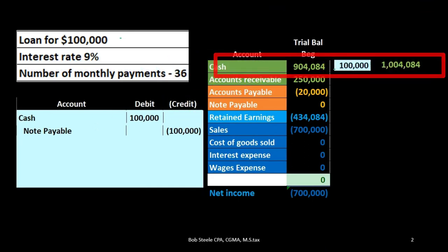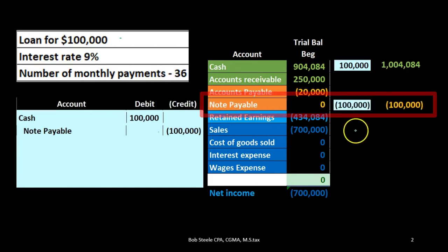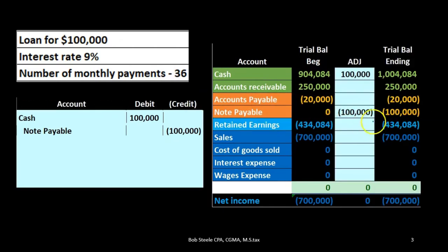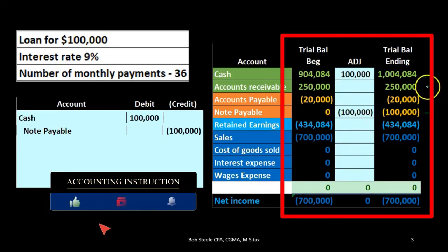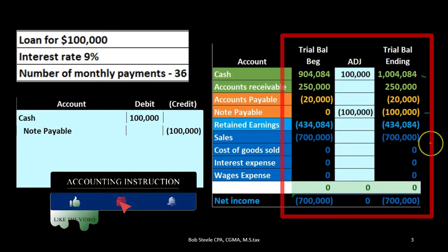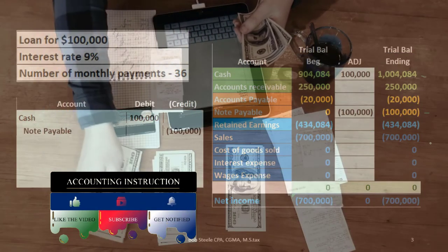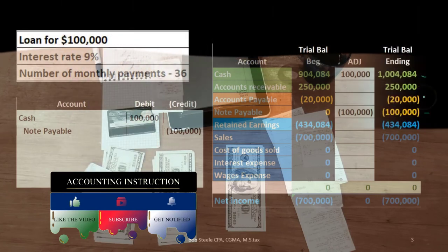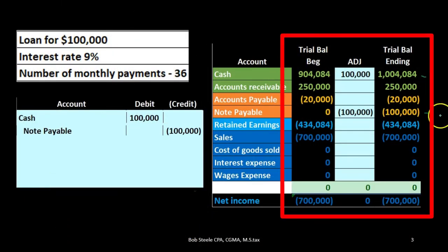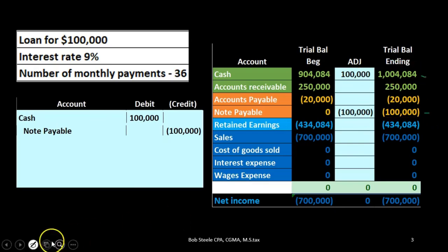So the initial recording is straightforward: cash goes up by $100,000 and notes payable goes up from zero in the credit direction to $100,000. Cash increases, the liability increases. Although we got cash, there's no effect on net income because we haven't incurred any expenses. We'll most likely use that cash to pay for expenses, other assets, or liabilities to help generate revenue in the future — but as of now, we've increased an asset and increased a liability.